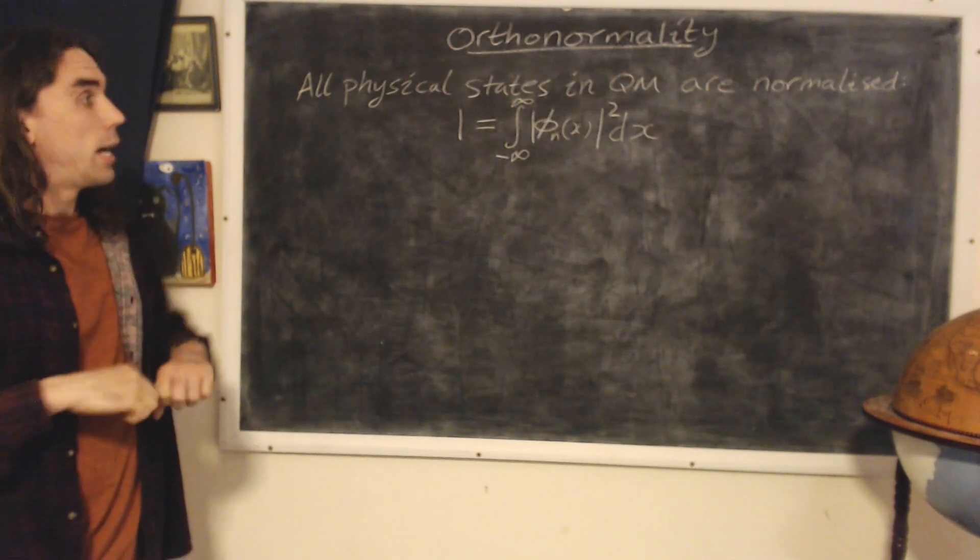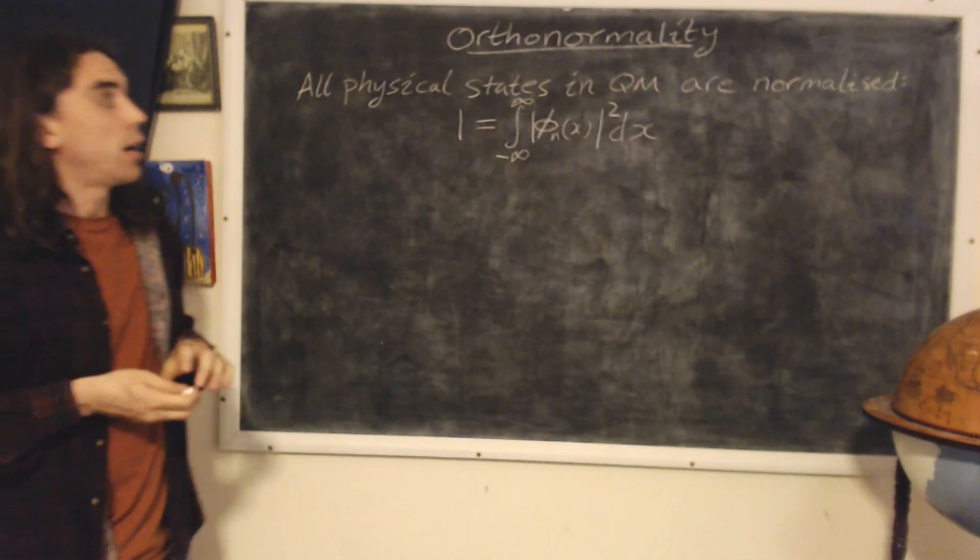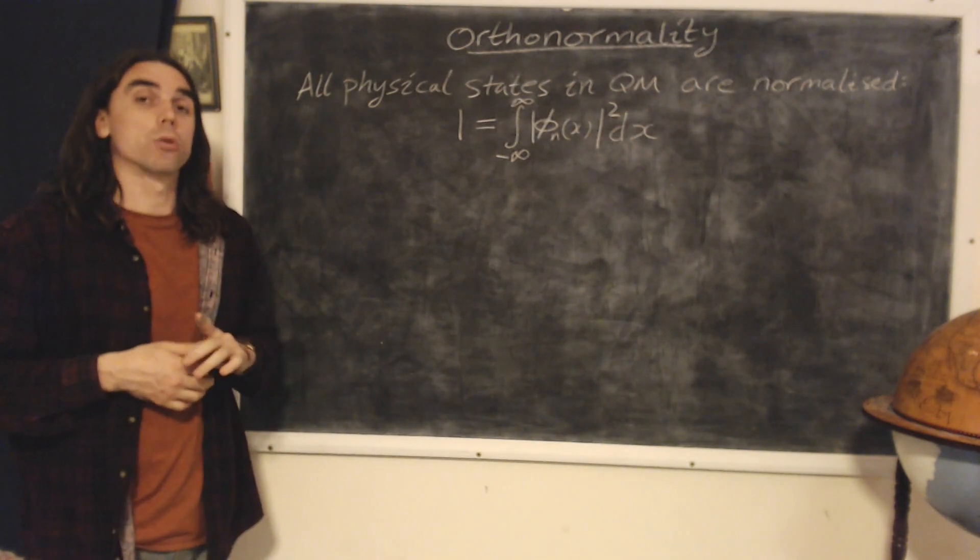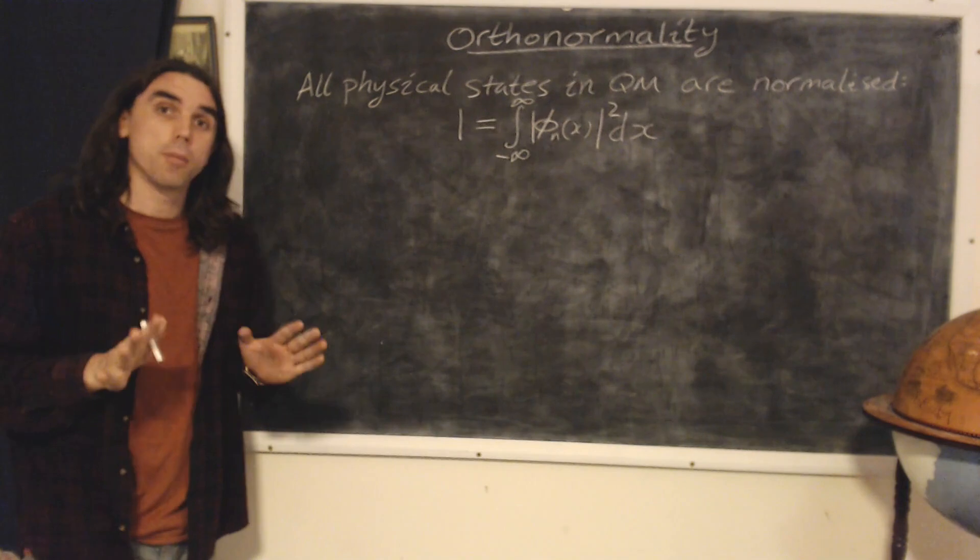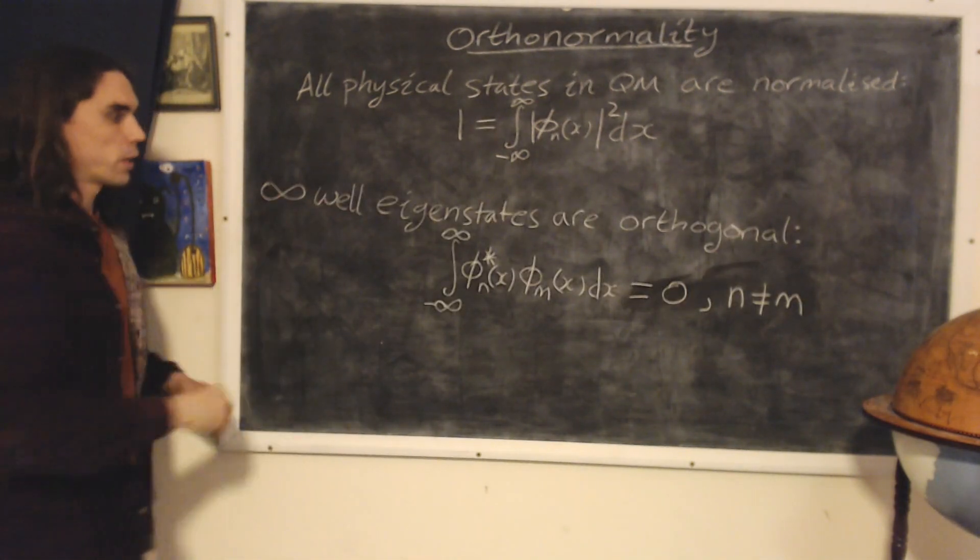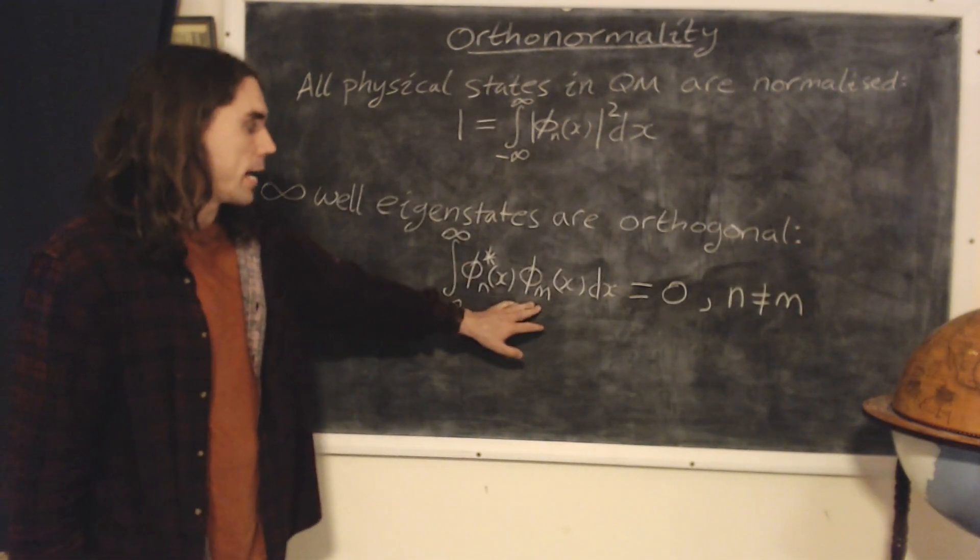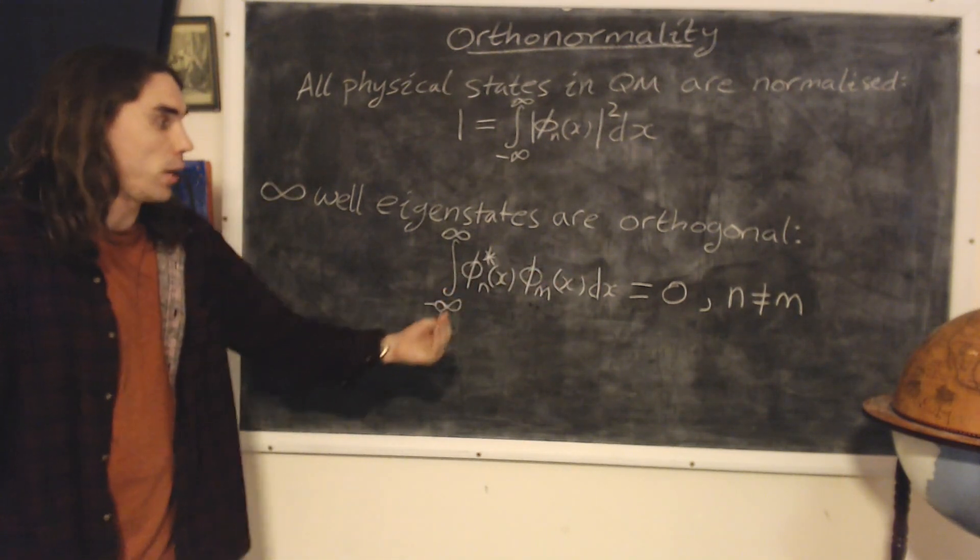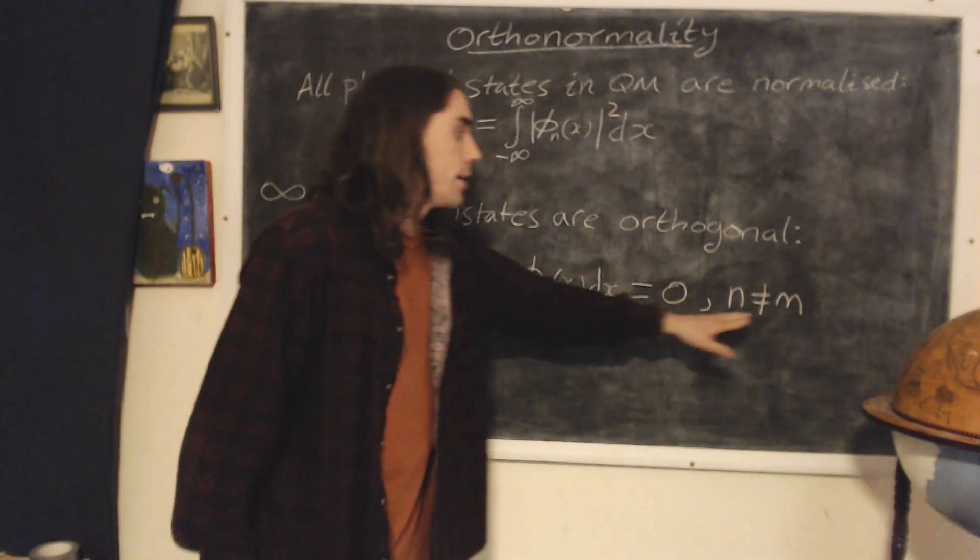But in addition, for any two different energy eigenstates of the infinite potential well, are also orthogonal to each other, by which we mean the following. The integral of phi n star with phi m over all of space, in this case over the range of the well, is equal to zero if n doesn't equal m.